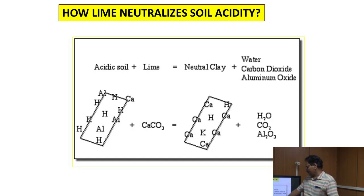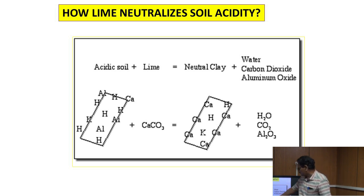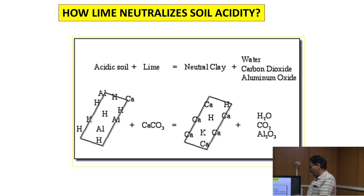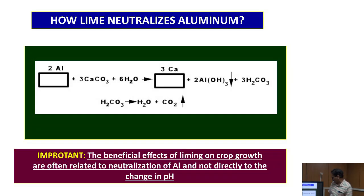Lime reaches the soil and protects against the acidity effect in the soil system. In the acid soil, when lime is applied, water, carbon dioxide, and Al(OH)3 are formed. Calcium saturation increases on the soil colloids, and aluminum and hydrogen concentration reduce from the soil colloids due to the lime application. This is the main role of lime when it reaches the soil.